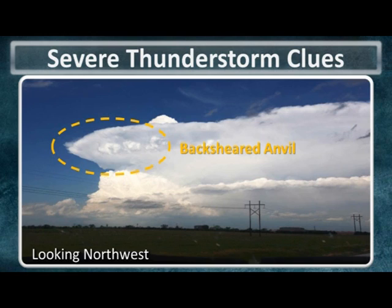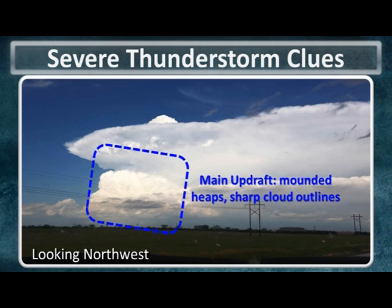Another clue that a storm might be severe is a backsheared anvil. In this example, the anvil is being blown from left to right by strong winds aloft. But since the updraft of the storm is intense enough, it can actually spread the anvil backwards into the wind. This indicates a very intense updraft and a high probability of a strong or severe thunderstorm. A third clue is shown by the main updraft of the storm, which appears as very thick and mounded clouds with crisp or sharp cloud outlines. If instead the updraft appeared as fuzzy or soft, we could say quite confidently that the storm would likely not be severe.